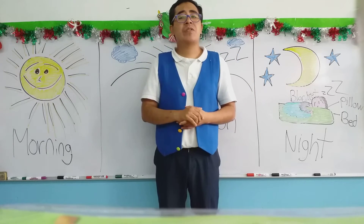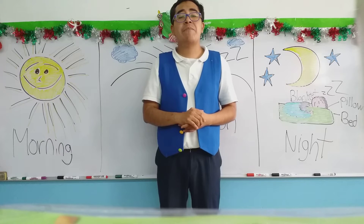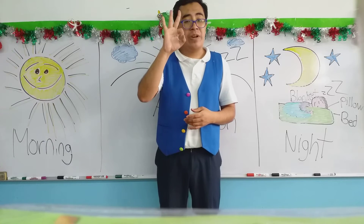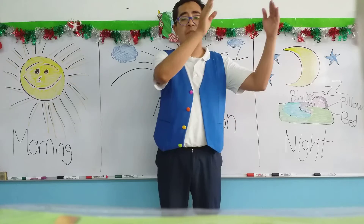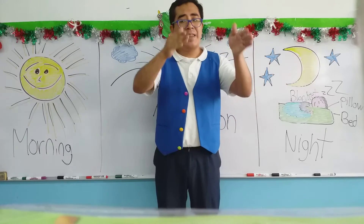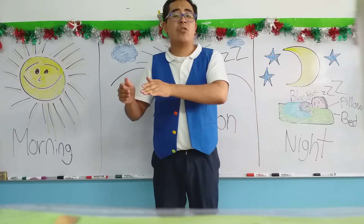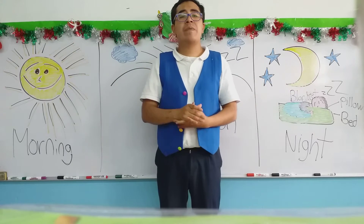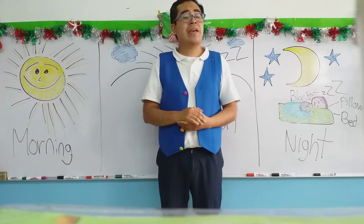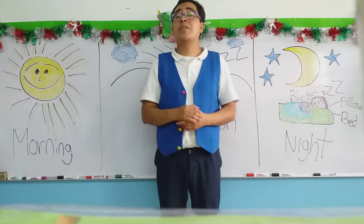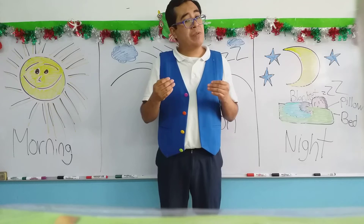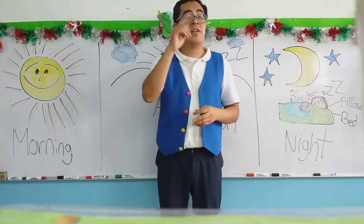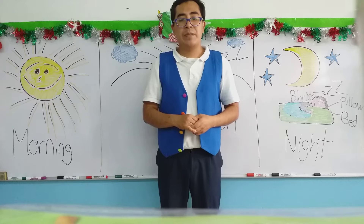Para el día de hoy vamos a continuar con las etapas que aparecen en un día. Recuerden que son tres: we have morning, la mañana, tarde, y la noche. Today it's all about night. El día de hoy vamos a hablar acerca de la noche, pero antes de comenzar con este nuevo tema, vamos a regresarnos al video de ayer a ver si ustedes recuerdan de qué trató.